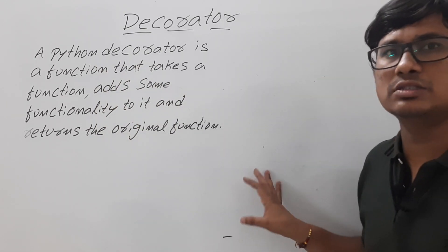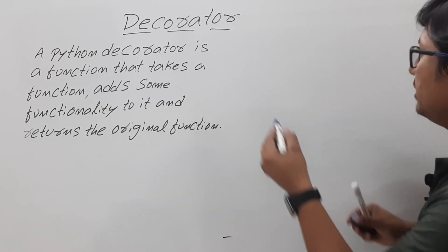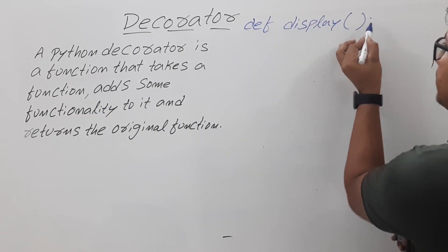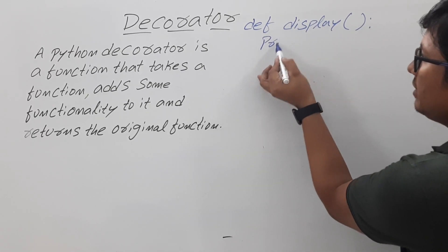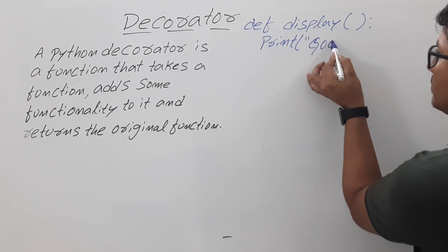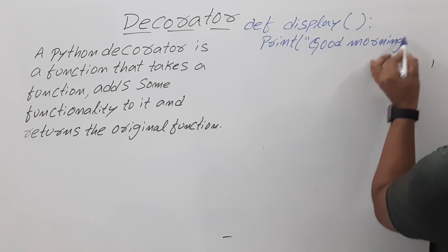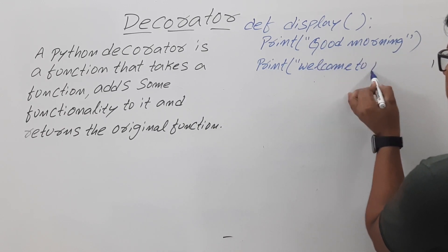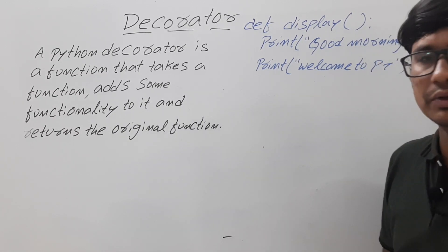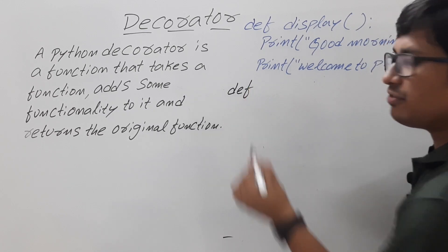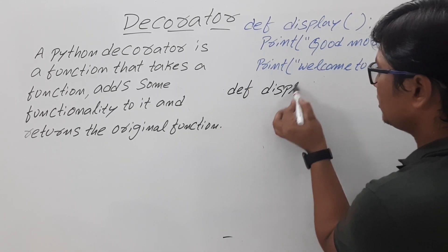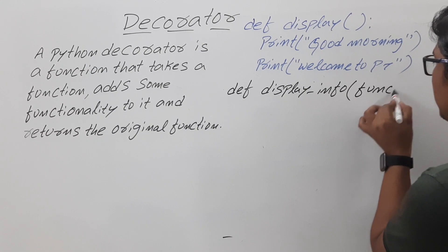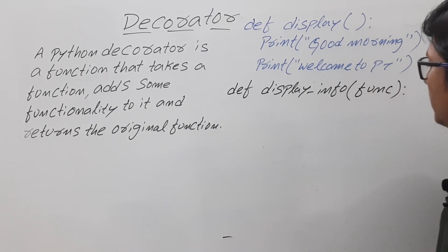I will discuss this concept with a program. Let me define a function called 'display'. It does not take any parameters and it will print the output as 'Good morning' and another statement 'Welcome to Panika tutorials'. This is the display function. Now I am defining another function called 'display_info'. This function takes one argument which is a function.